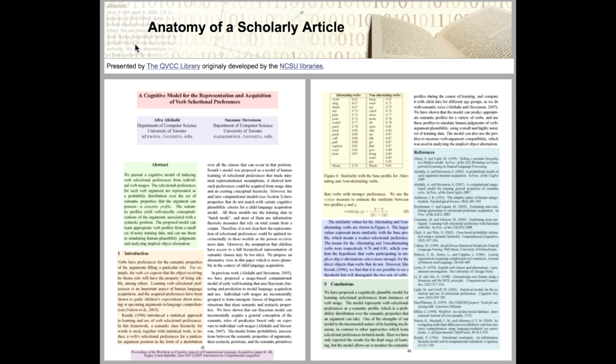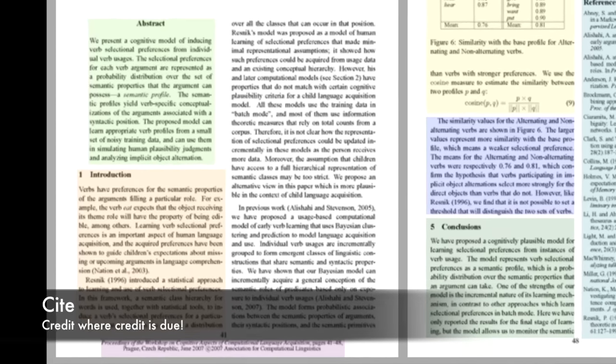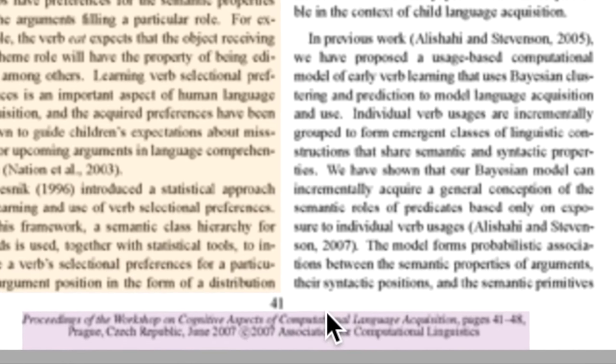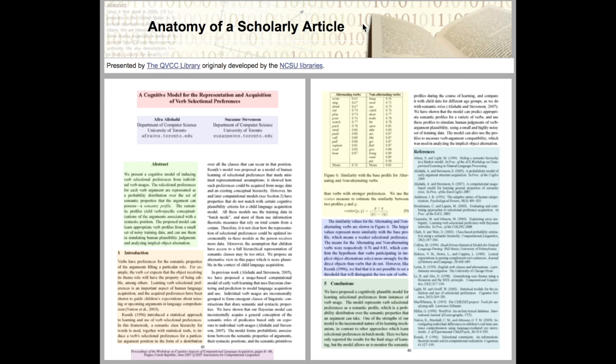Make note of how you might use this information in your research paper. The time you spend now on annotation will make it way easier to find what you need later. Finally, copy and paste all the information you'll need to create a properly formatted citation. Keep in mind, every article will be slightly different, but all scholarly articles will share this same basic anatomy. Good luck!